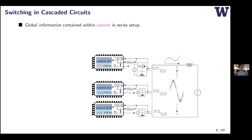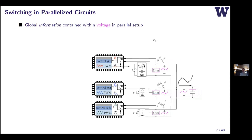Going back to the problem at hand — I want a controller that I strap around my power converter, interconnect it with a bunch of other converters, and they all just interleave. What makes this happen is there has to be some global information visible at the individual unit that allows some action driving all of them globally. In a series connected setup, the global information is the current since they're all in series. In a parallel connected setup, global information is in the voltage since they can all see the same voltage.